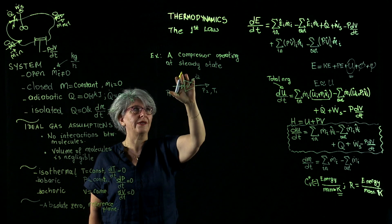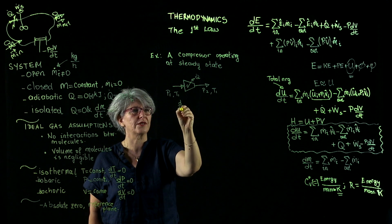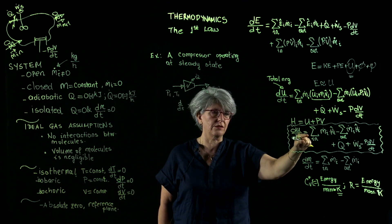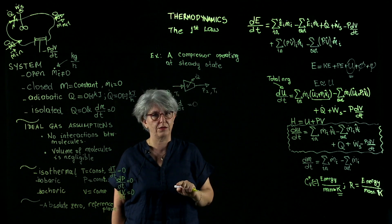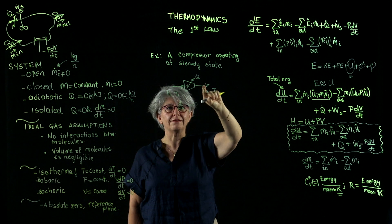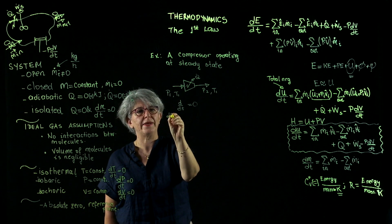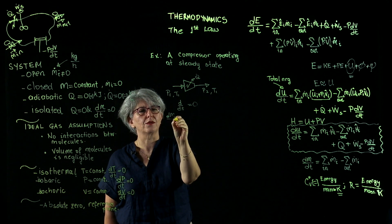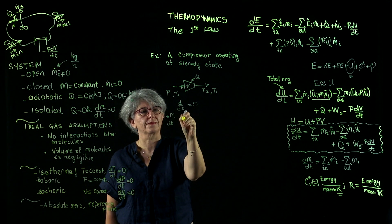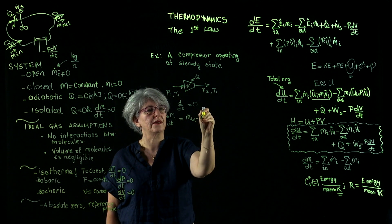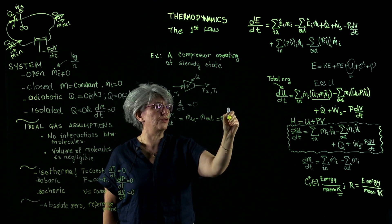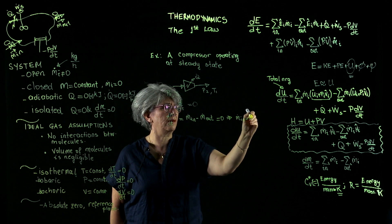In this open system operating at steady state, the d/dt terms are zero. Both the dU/dt and dm/dt terms are equal to zero. Our compressor has one inlet and one outlet. Writing the mass balance as dm/dt = ṁ_in − ṁ_out, and setting it equal to zero, we deduce that ṁ_in is equal to ṁ_out.